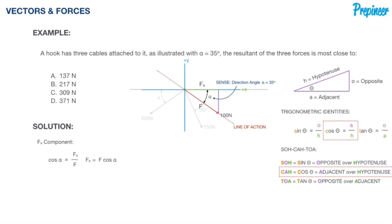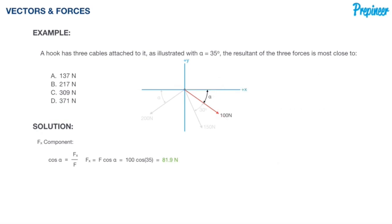Rearranging that to isolate our x component force, we get a new equation: F times cosine of alpha. Having all this data, we just plug it in and we find that our force in the x direction, our x direction component of the 100 newton force, is 81.9 newtons. Alright, so let's move on.